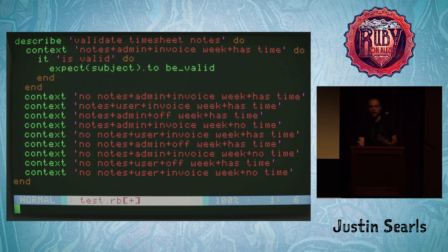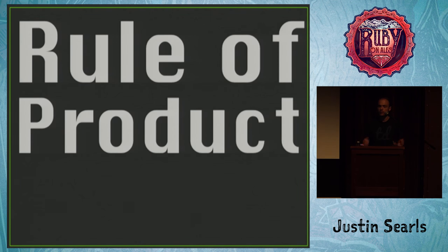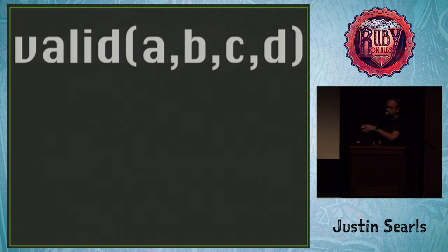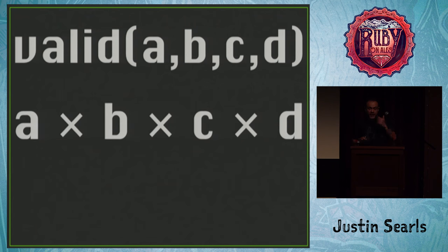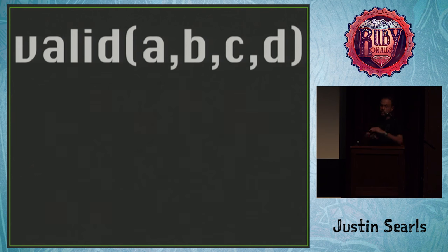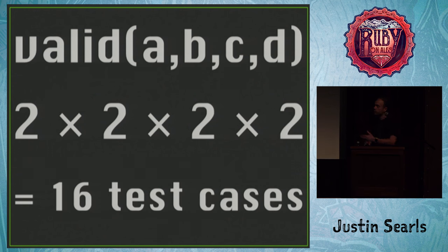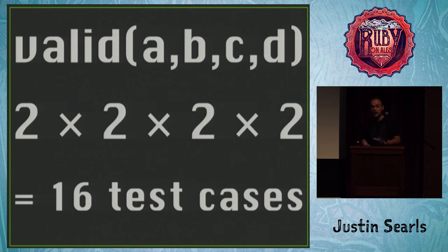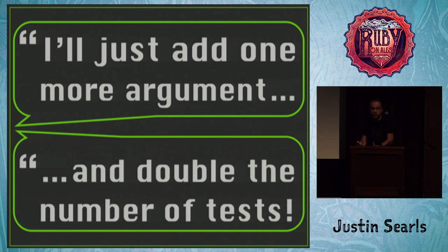What happened is I fell victim to a thing called the rule of product. The rule of product comes from the school of combinatorics in math. To TLDR it: if I've got a method with four arguments, to figure out the number of possible combinations of those four things, you multiply together the number of variations between them. When they're all Boolean attributes, it's 2 to the 4th — so we have to write 16 test cases for this very trivial validation method. If you're used to big objects, it's not uncommon to think 'I'll just add one more little argument here,' not realizing the implication is 'and double the number of tests I have to write.'